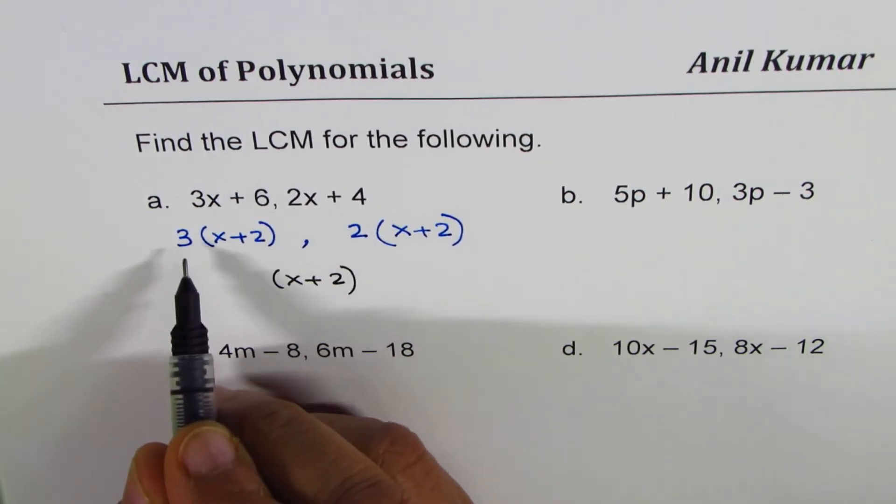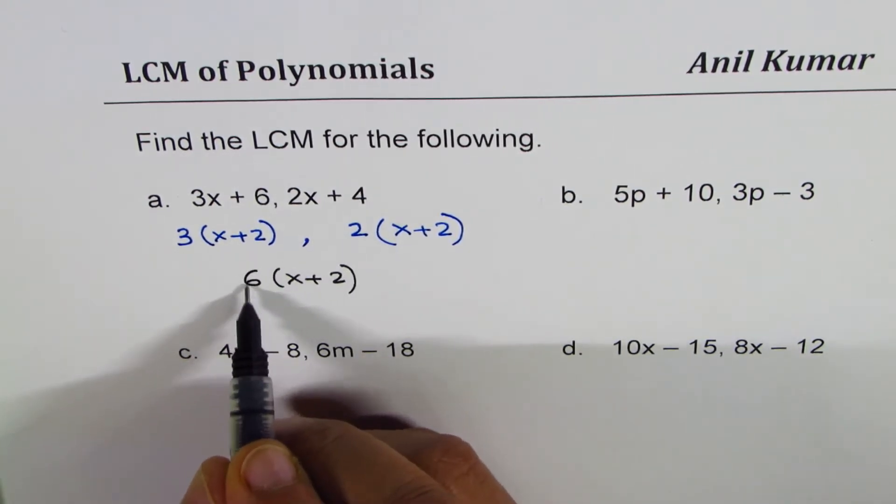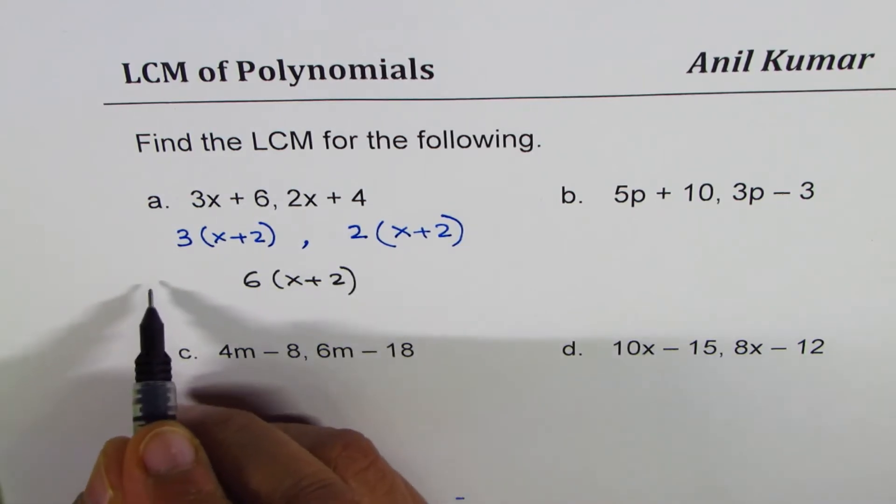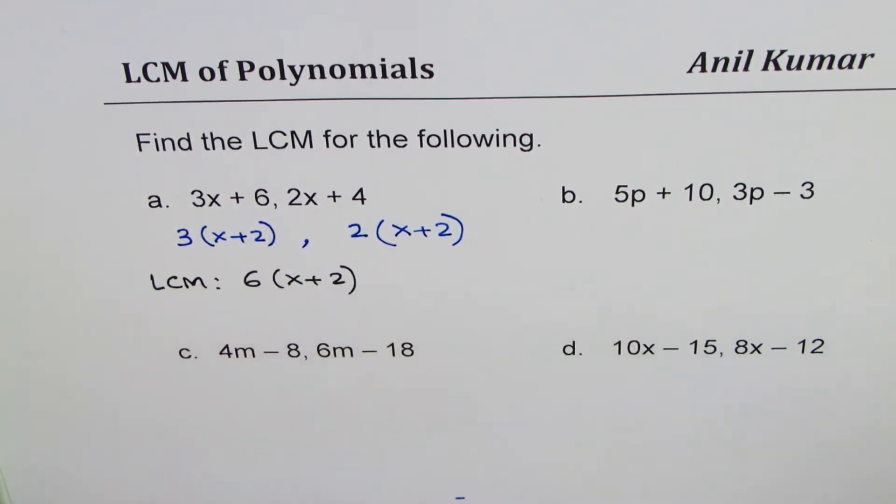As far as the numbers are concerned, 3 times 2, the lowest common multiple between the numbers is only 6. So we get 6 times x plus 2 as the LCM. So that becomes the LCM for the first case.